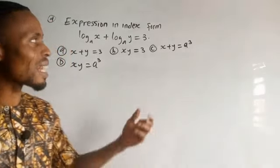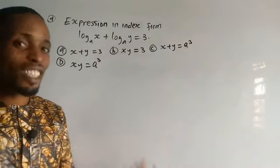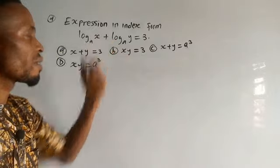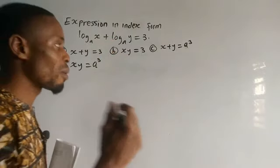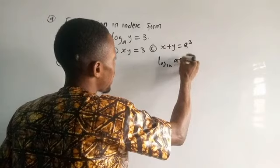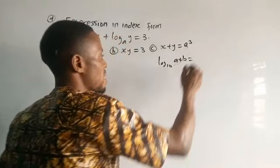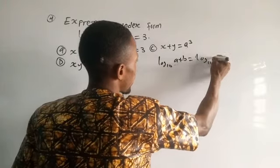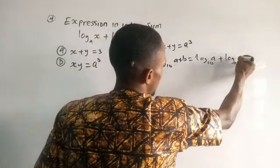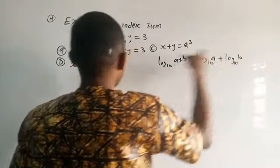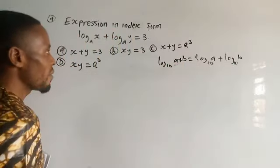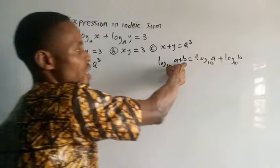Our next step is to recall the log rule that states: when you have log base 10 of a multiplied by b, this can be expressed as log base 10 of a plus log base 10 of b. So the multiplication changes to addition. You can see that this expression is the same form as the expression we have in the question, and applying it will give us our next step.